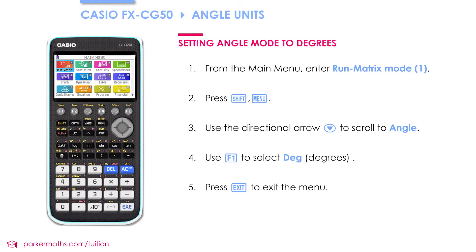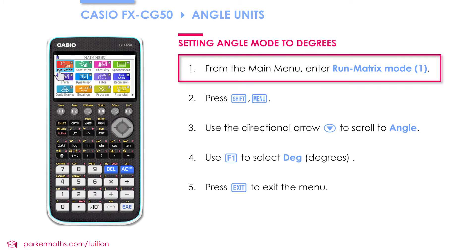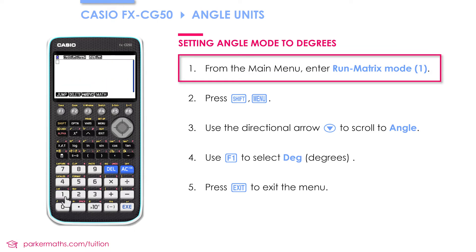Let's first take a look at how to switch the calculator between degrees and radians mode. I'm going to go into Run Matrix mode, which is number one, although you can do this in other modes as well. Notice at the top of the screen it tells you what mode the calculator is currently in — it's currently in radians.